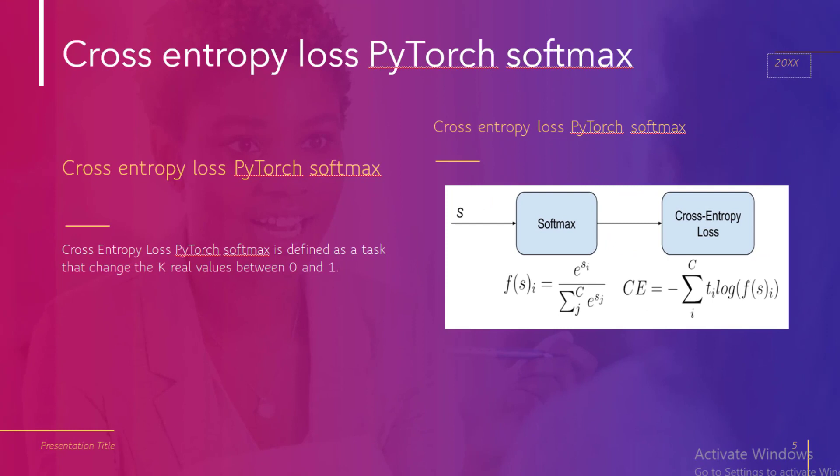Let us move to the next topic: Cross Entropy Loss PyTorch softmax. The Cross Entropy Loss PyTorch softmax is defined as a function that changes the carrier values between 0 and 1. The purpose of the softmax is to measure the distance from the true values and to take the input probabilities.